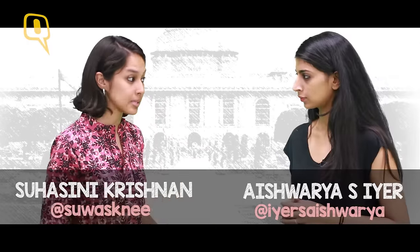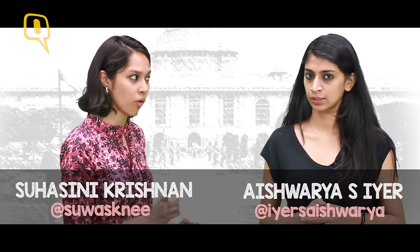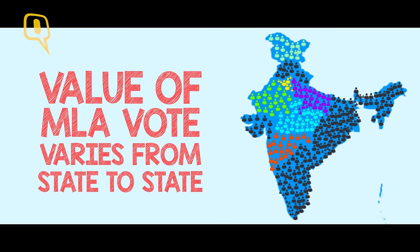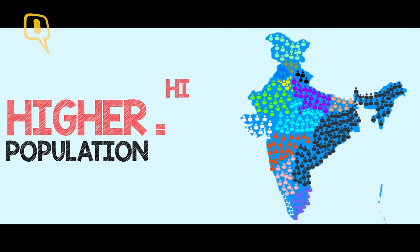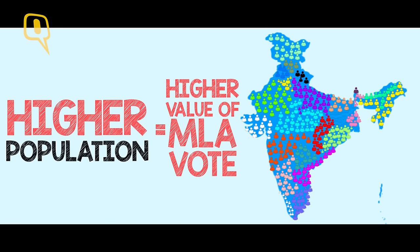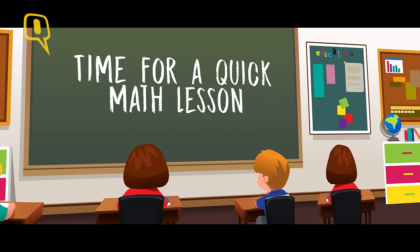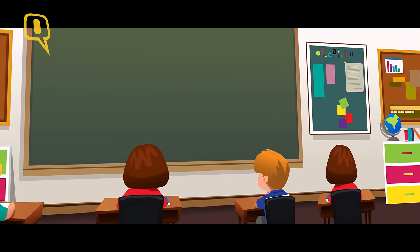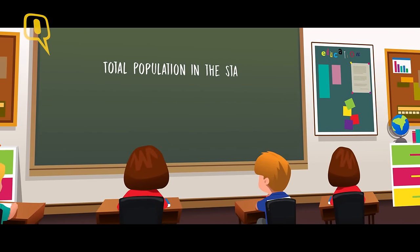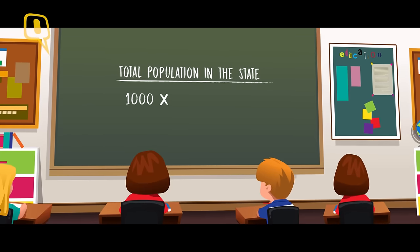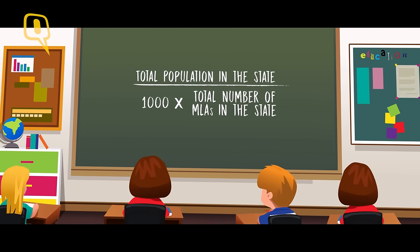So what you're saying is every MLA and MP gets one vote each? Well, it's not that simple. Generally in an election, each vote has one value. However, in presidential elections, the value of the vote of each MLA varies from state to state, and this is done to give weightage to the population of each state. The value of the vote of each MLA is calculated by the total population in the state, divided by 1000 and further divided by the total number of MLAs in the state.